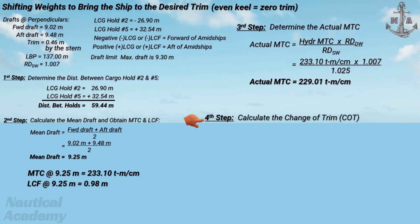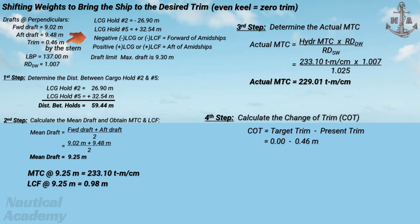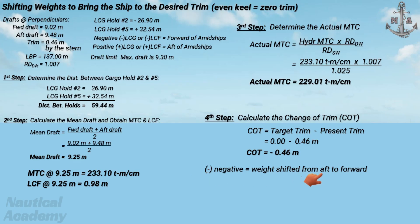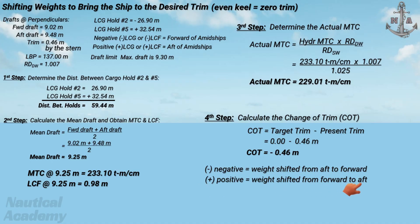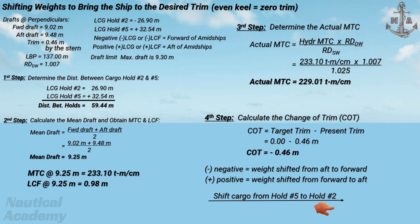Next, let's calculate the change of trim, which equals the desired or target trim minus the present trim. We want to bring the ship to an even keel, so the target trim is 0 and our present trim is 0.46 meters by the stern. Therefore, the change of trim is negative 0.46 meters. The negative sign indicates the weight will be shifted from the aft compartment to the forward compartment. Since the ship is trimmed by the stern and we want even keel, shifting cargo from aft to forward will reduce the aft draft and increase the forward draft.